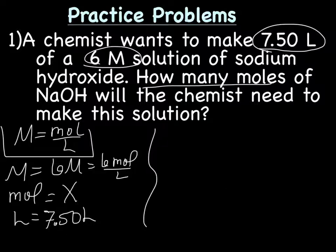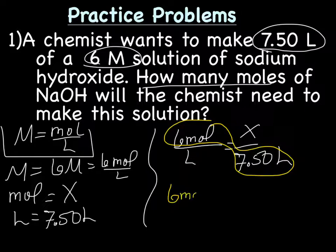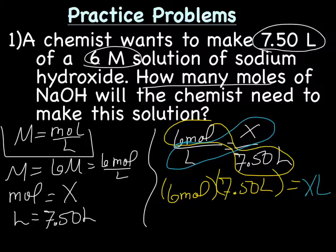So we're going to have capital M, which is 6 mol per liter equals mol over liter: X over 7.50 liter. Now to solve a problem where you have two fractions with an equal sign in between is that we cross-multiply. So we're going to multiply those guys. So we'll have 6 mol times 7.50 liters equals, and we're going to multiply these guys, X liters. When I multiply, please do this with me. Make sure I did it right.